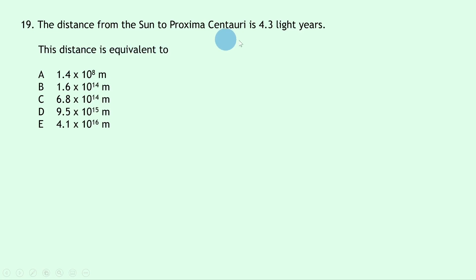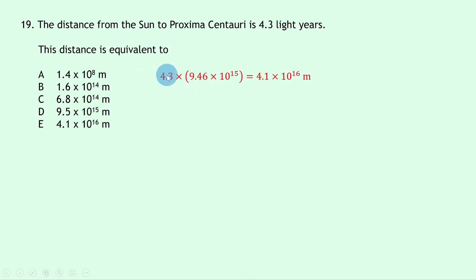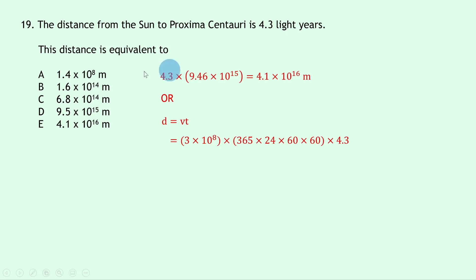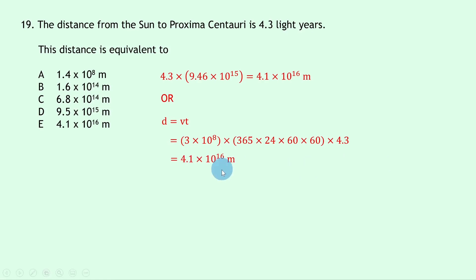Question 19 asks for the distance from the sun to Proxima Centauri of 4.3 light-years in metres. You can either use the fact that one light-year is 9.46×10¹⁵ metres and multiply by 4.3, or use D = VT with the speed of light (3×10⁸ m/s) multiplied by the number of seconds in one year (365 × 24 × 60 × 60), then multiply by 4.3. Either method gives 4.1×10¹⁶ metres — answer E.